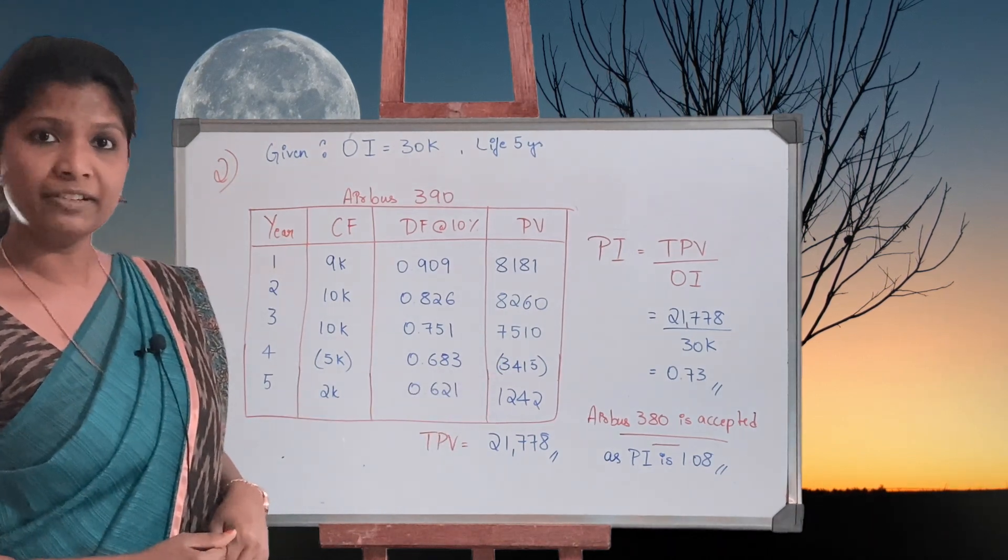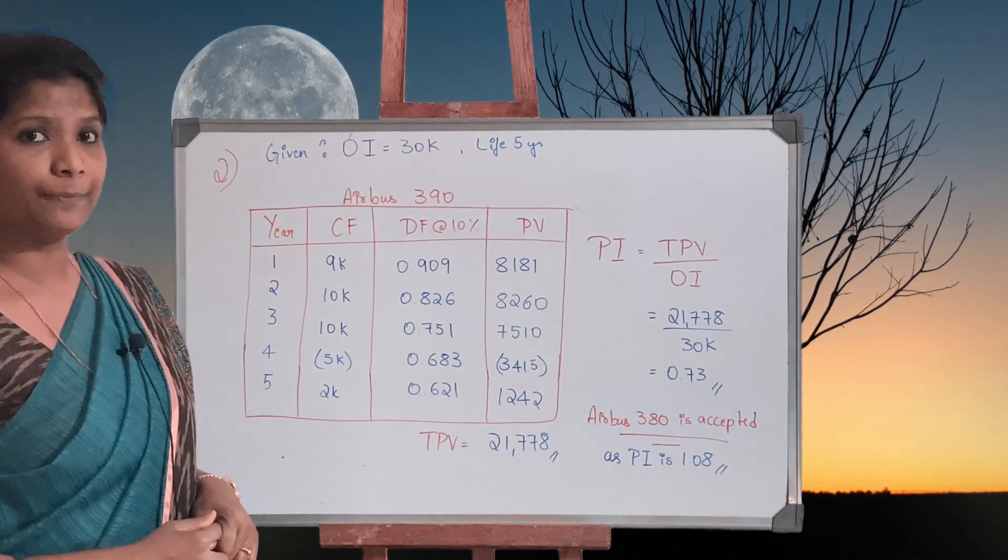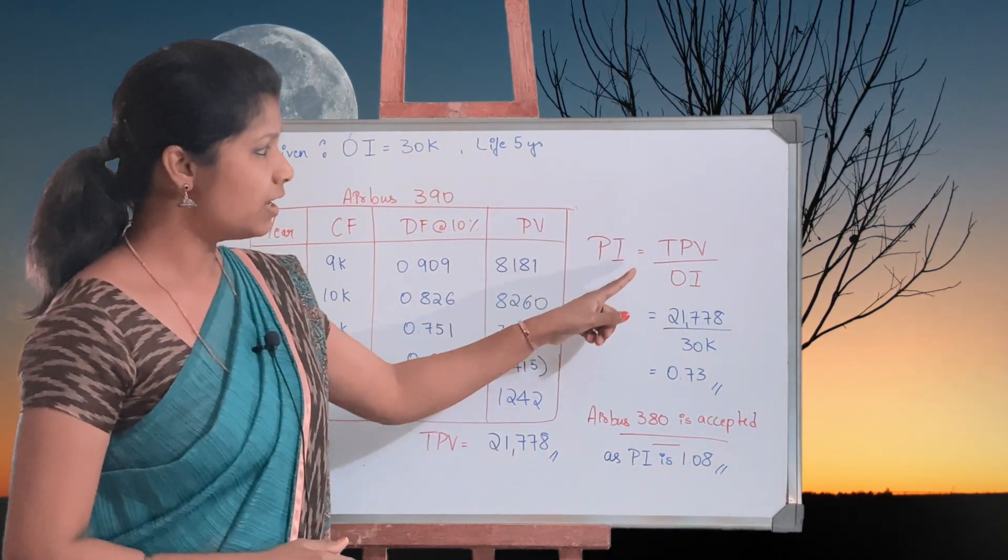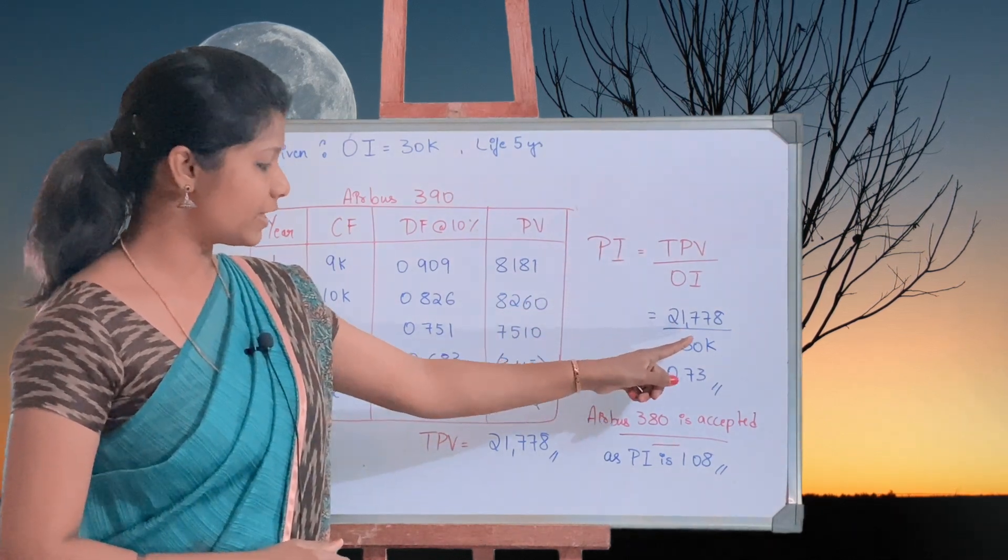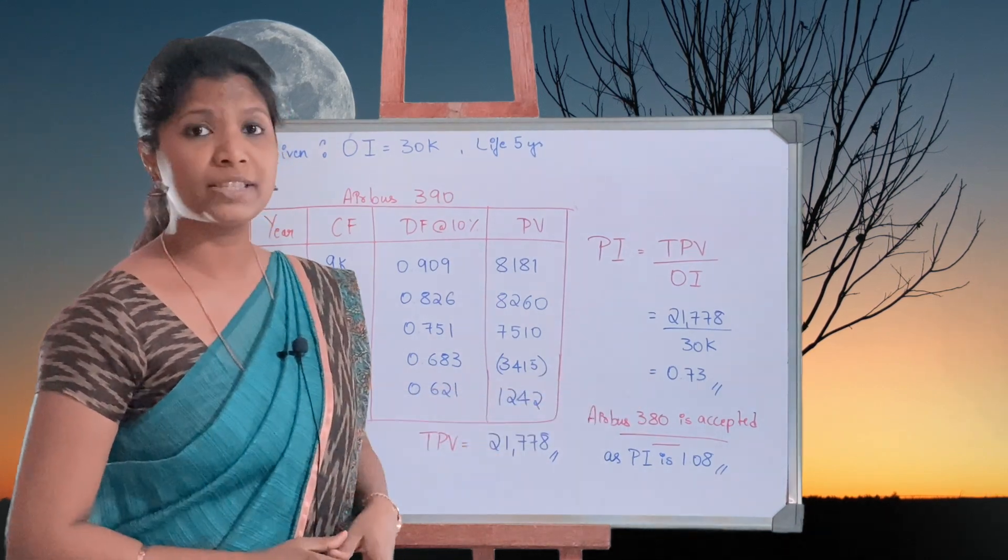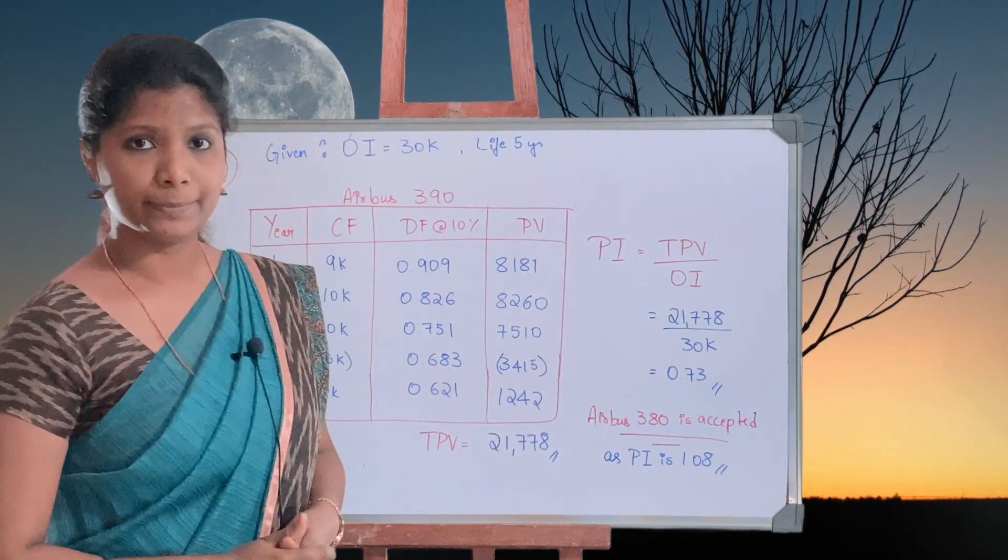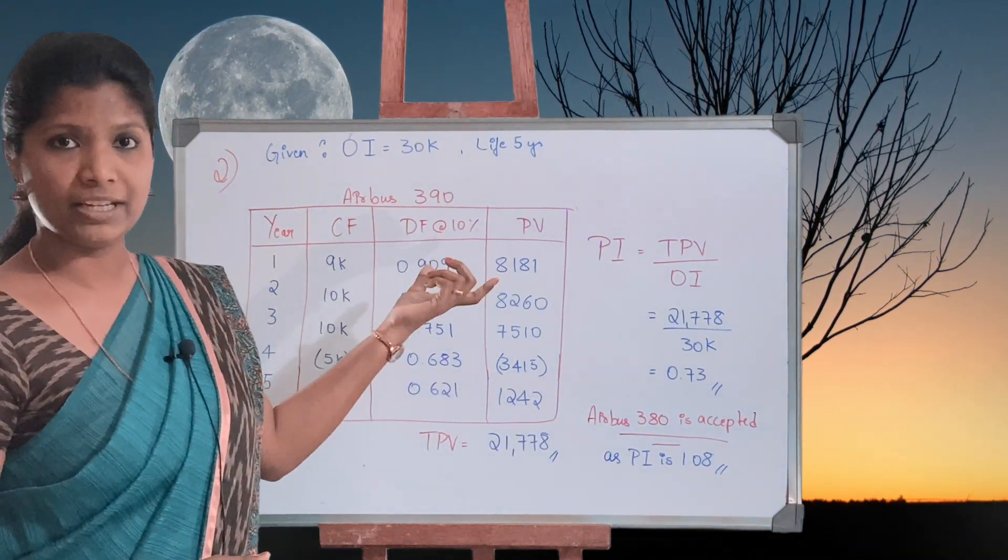Moving on to the formula: total present value divided by original investment. 21,778 divided by 30,000 - the value is 0.73. Therefore, if we compare the values of Airbus 380 and Airbus 390, both the values show Airbus 380 stands more profitable than the second Airbus.